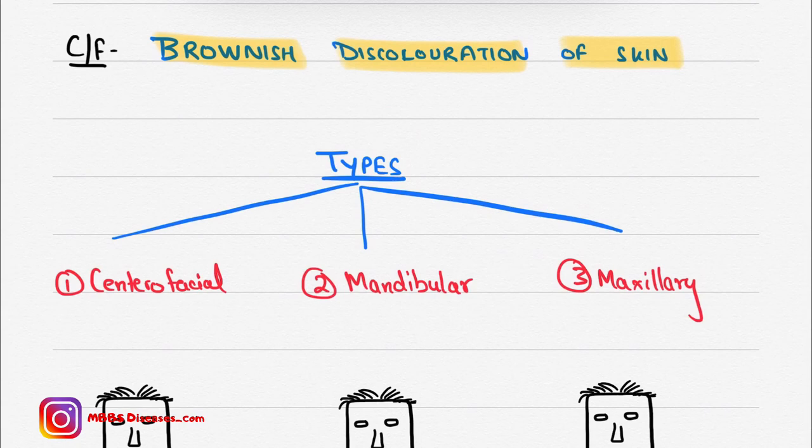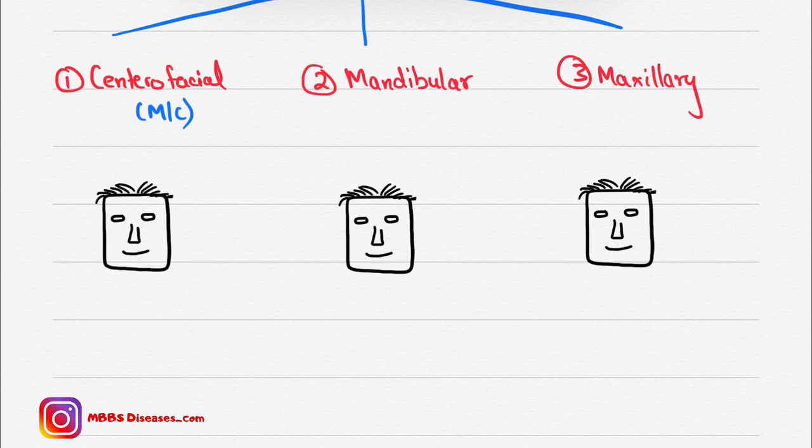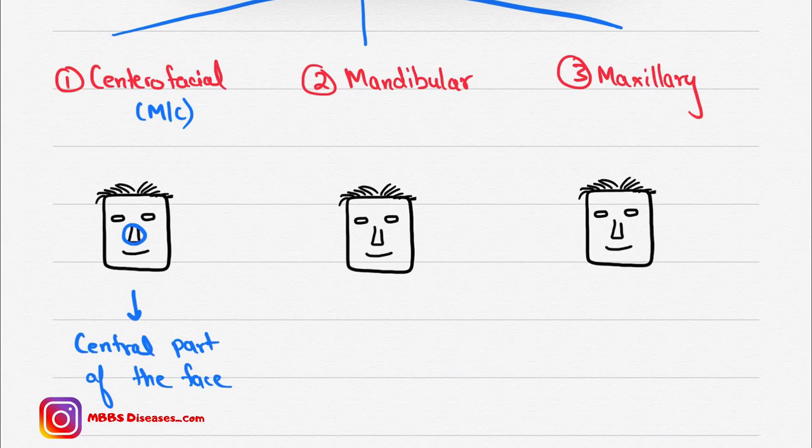The centrofacial type is the most common type. Now what happens here? I draw this face. If this area is involved, the nose area or central area, then it is known as centrofacial. The central part of the face is involved.